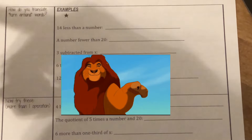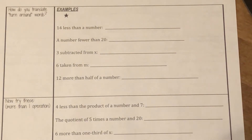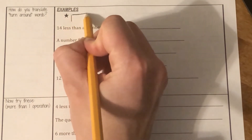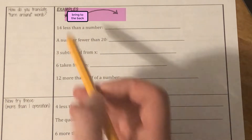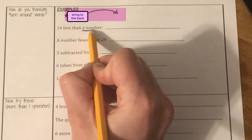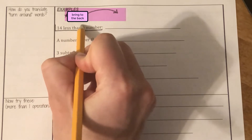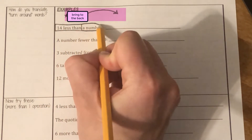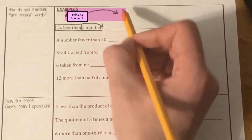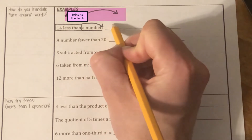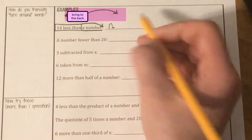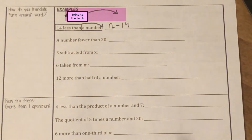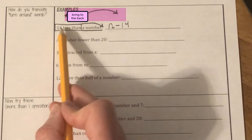Now let's look at how to translate turnaround words. Think of it like walking around to the back. Turnaround words — box them and bring them to the back. Example: 14 less than a number. Even though '14 less than' comes first in the words, it needs to be turned around and come after the number. Use the variable N. 14 less than a number translates to N minus 14. This is a turnaround phrase.